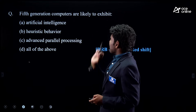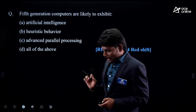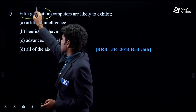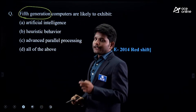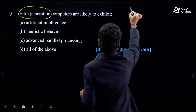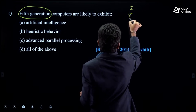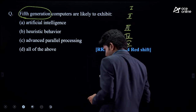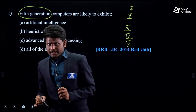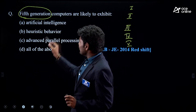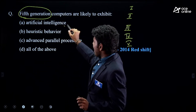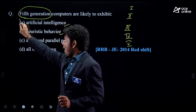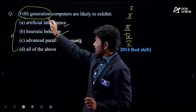Next question: 'Fifth generation computers are likely to exhibit.' Try to understand this question. They've asked something about fifth generation computers. There are five generations of computers. For fifth generation: artificial intelligence, heuristic behavior, advanced parallel processing — all of the above. These are expectations from a fifth generation computer — in short, it should be able to think on its own.